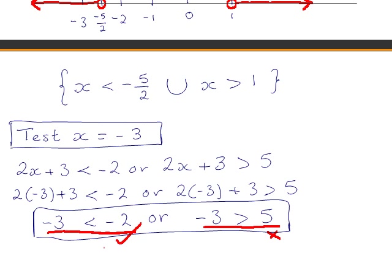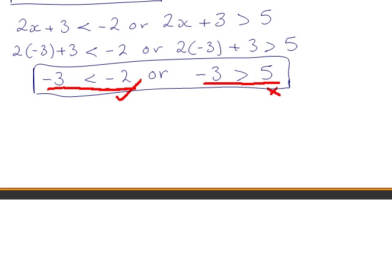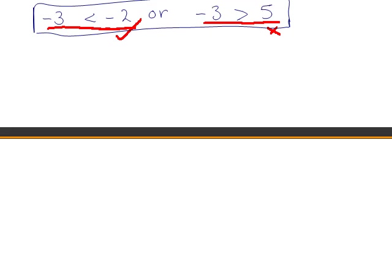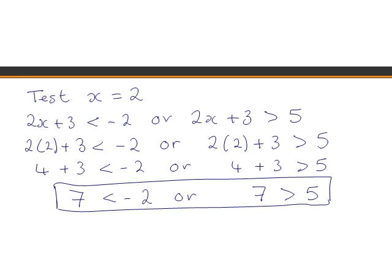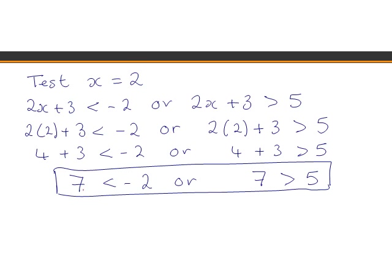Now we'll test a value greater than 1, so we'll test x = 2. You should check this yourself — when you fill in x = 2 into our original inequality statements, you get 7 is less than −2 or 7 is greater than 5. Now 7 less than −2 is not true, but 7 greater than 5 is true. So at least one of our statements has been satisfied, and 2 is part of the solution.